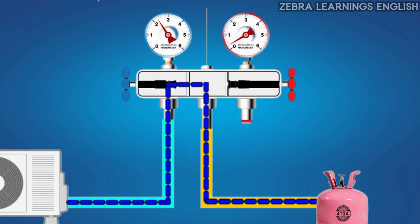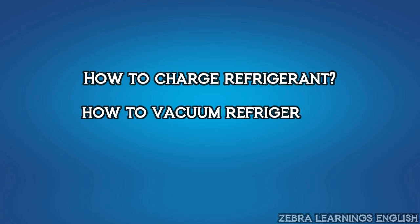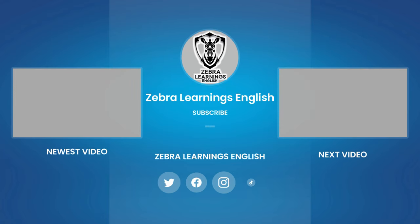This is the basic working details of manifold gauge. If you have any doubts, please ask in the comments section. In subsequent videos, how to charge the refrigerant, how to vacuum and how to check the pressure of the refrigerant can be seen continuously. If the video is useful, please like the video and subscribe to our Zebra Learnings English channel. Thank you.